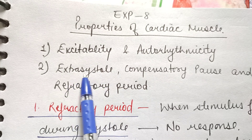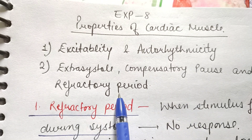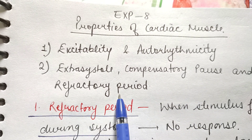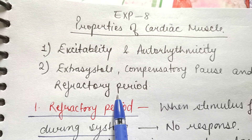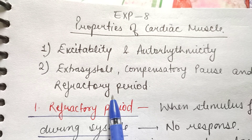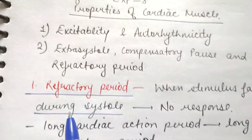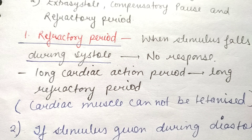The first property is extra systole, compensatory pause, and refractory period. Basically, scientists studied all these experiments on frog and then the concepts came into our books as muscle physiology. We are now reading skeletal muscle, cardiac muscle, and smooth muscle — all the properties have been worked out on animals and then the concepts came into books. So they helped us actually understand all the muscle physiology properties. Let us see what is the refractory period.